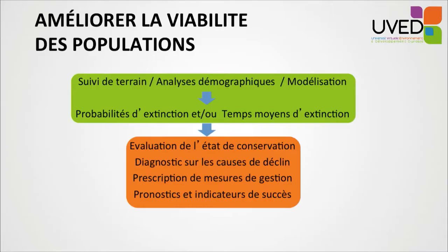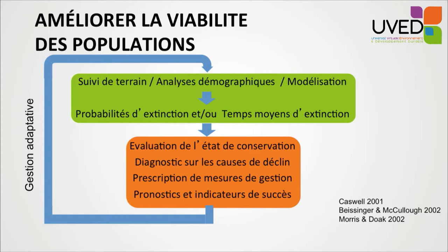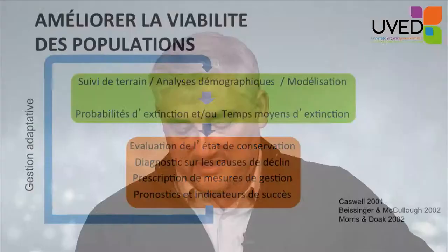How can we improve their viability? We must monitor their evolution in the field. We must provide statistical and demographic analysis data to model the extinction likelihood and average time before extinction, so we can understand the state of preservation and diagnose the causes of decline. We can also suggest management actions, make a prognosis, and come up with success indicators to perform long-term monitoring and adaptive scenarios in order to revise previous management actions.